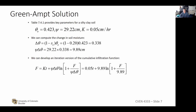You can rearrange the cumulative infiltration equation slightly to facilitate iterative calculation using fixed-point iteration. On the right-hand side you put a guess for F as input, then calculate the result. If the output F matches your guess, you're done. If not, use the result of the previous calculation as the new guess and it will eventually converge.